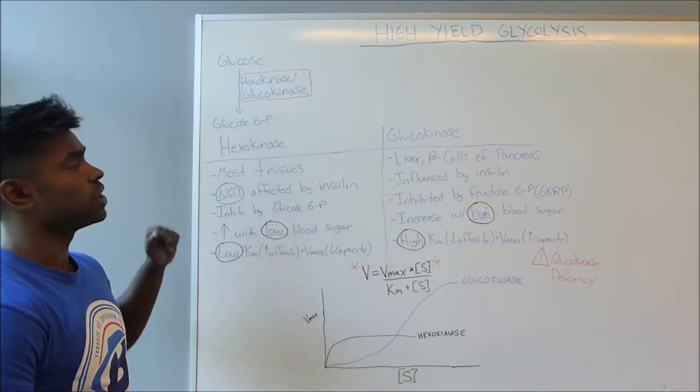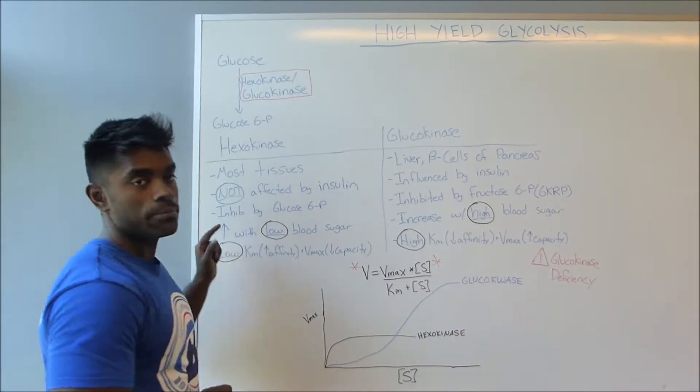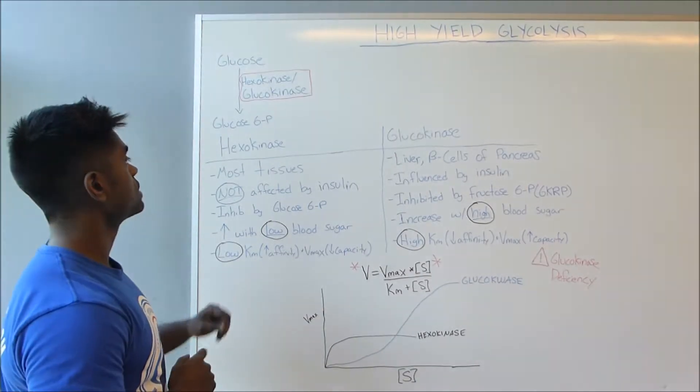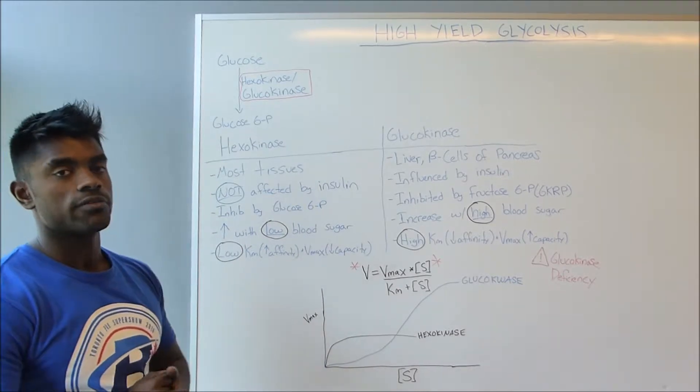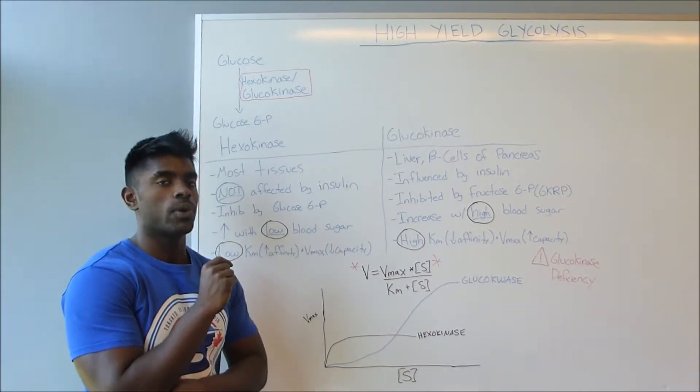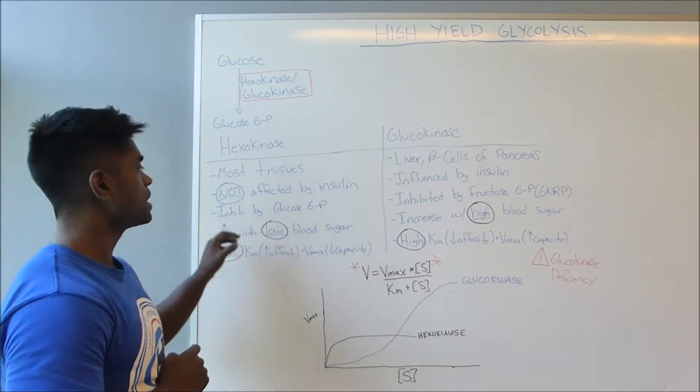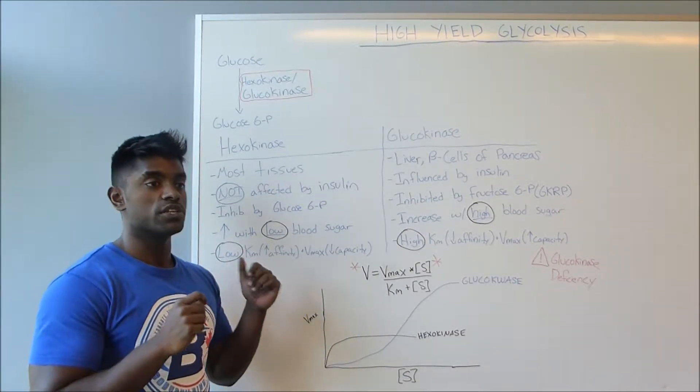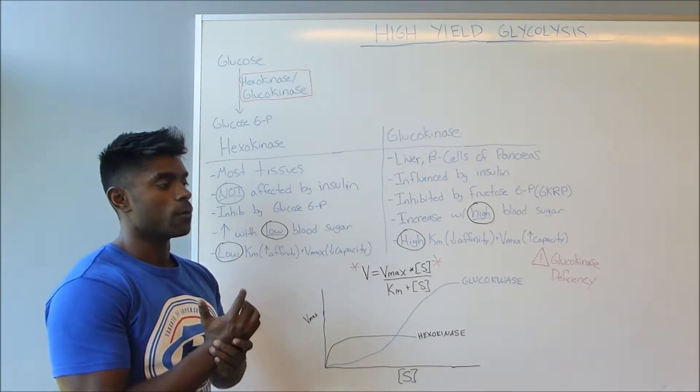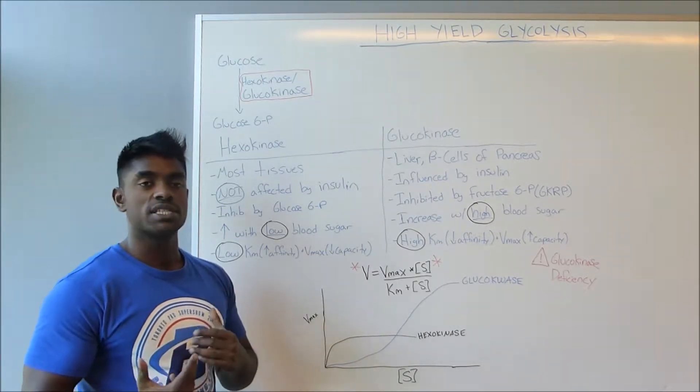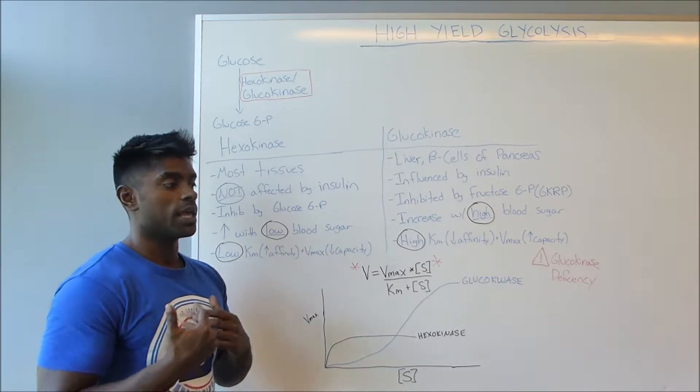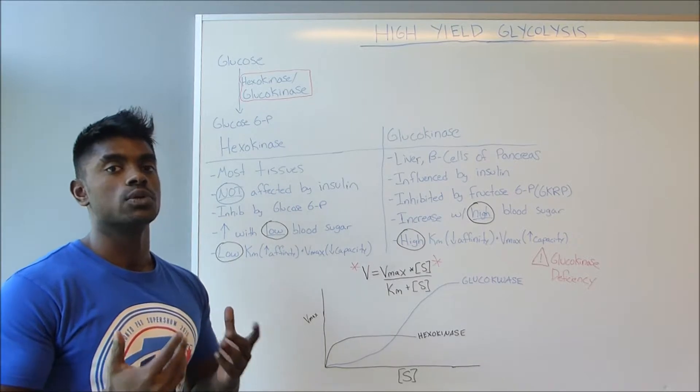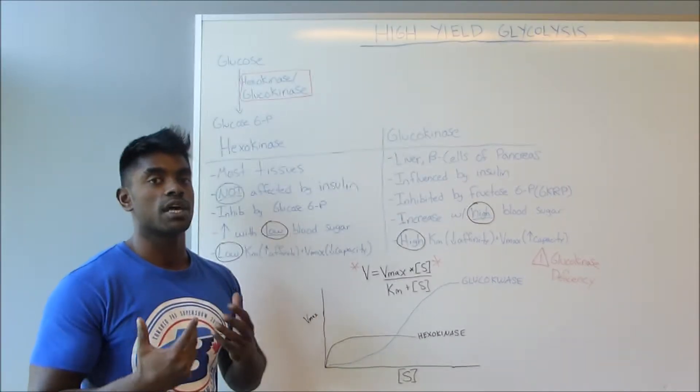The next thing we should know is that hexokinase is actually inhibited by glucose 6-phosphate. Now glucose 6-phosphate is going to be the product of the enzyme itself. So from this point we can realize that because it's inhibited by its own product, within the tissues, there's no reason to be taking up glucose if there is already glucose 6-phosphate inside the cell because there's no need for excess glucose consumption with most of the cells within the body.